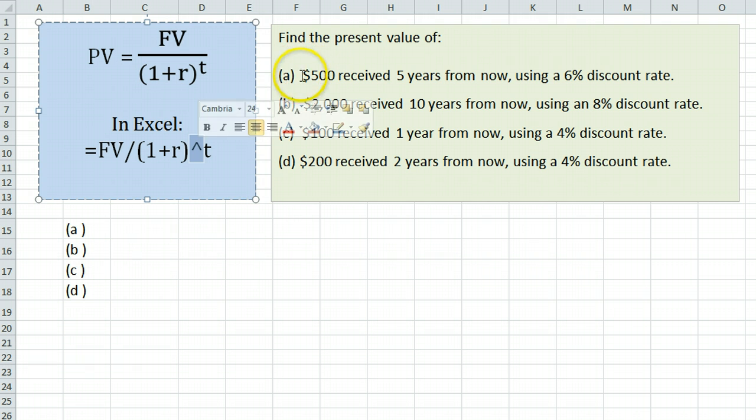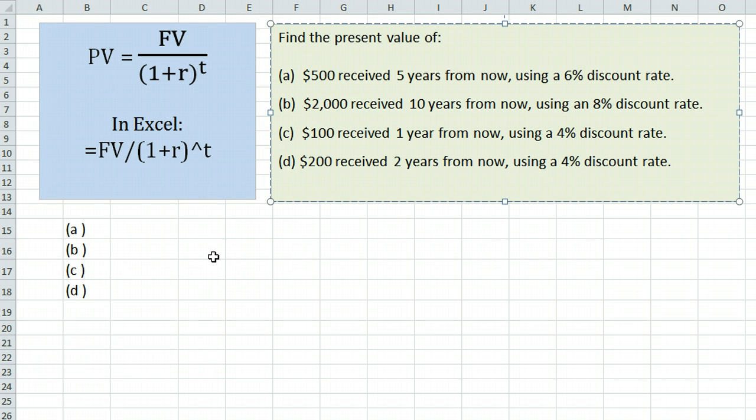We have some examples over here. The first one is asking to find the present value of $500 received five years from now using a 6% discount rate. According to our formula, it is equal to the future value, 500, divided by 1 plus the interest rate, 6% expressed as a decimal is 0.06, close parentheses, the caret, shift 6,